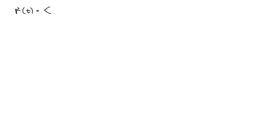A vector function is a vector whose components are functions. Suppose we have our vector with components: a function of t for the x component, a function of t for the y component, and another function of t for the z component.